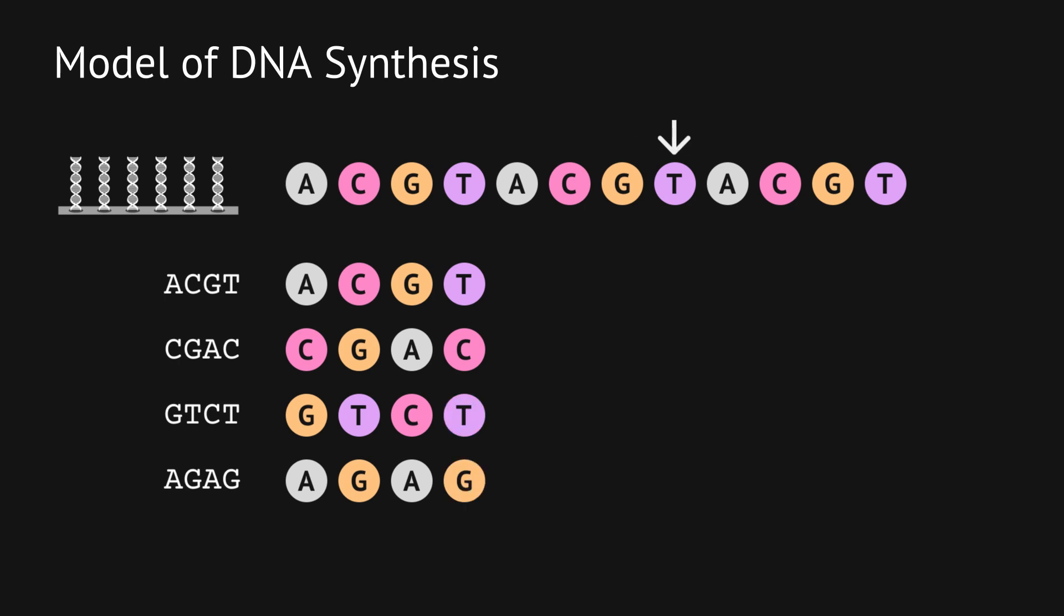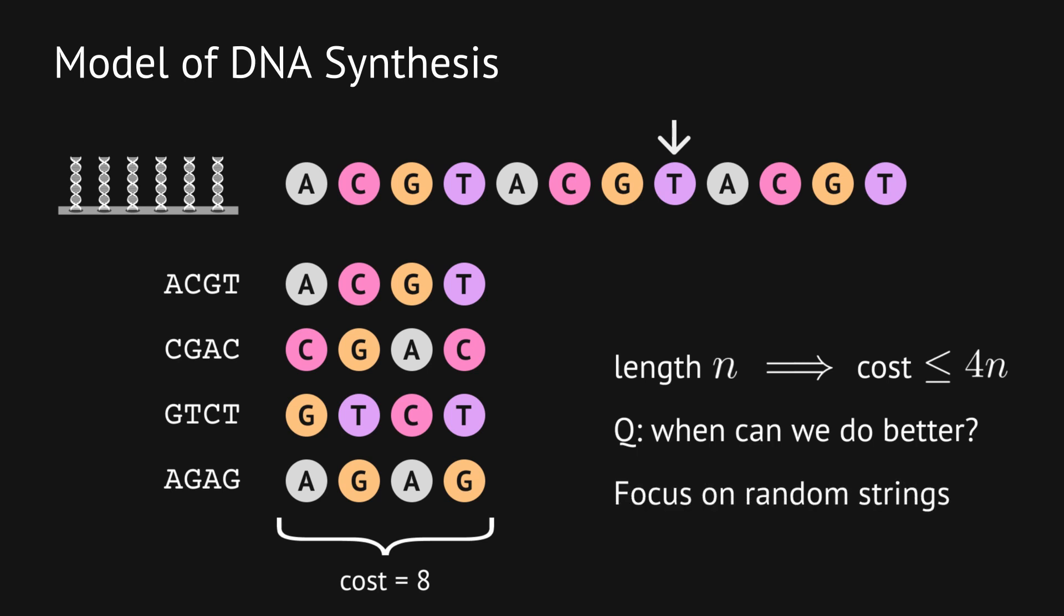For example, any string of length n takes at most 4n steps. We refer to the minimum number of steps for a set of strings as the cost of the batch. But each step uses a lot of materials and so we want to use as few steps as possible. A key insight from our previous work on DNA data storage is that storing data in a set of random strings has many benefits.